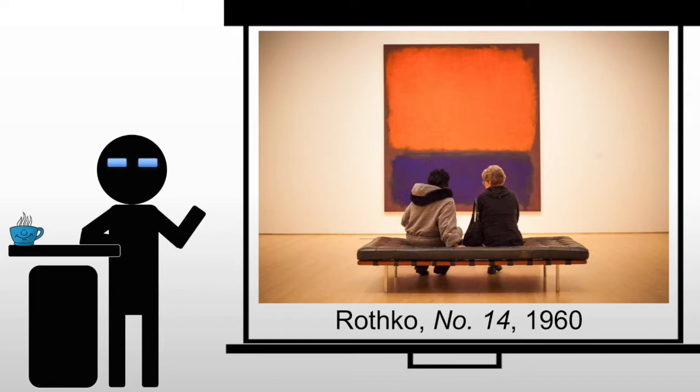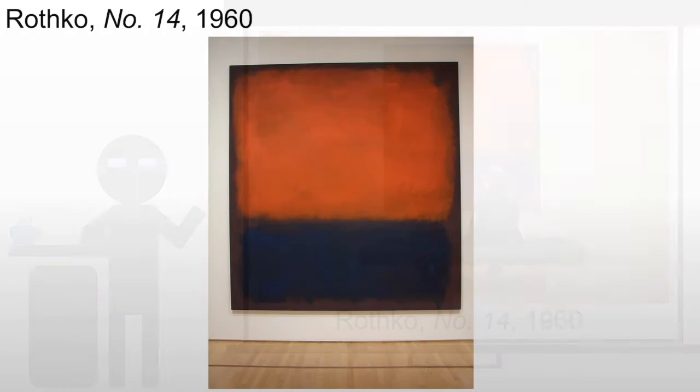The piece we're looking at is his Number 14, 1960 — another number-based system, numbered by year. A warning if you ever research Rothko: make sure you confirm that the Number 14, 1960 you're looking at is the one you're thinking of. You always need a visual reference with Rothko because sometimes the numbers and years get mixed up.